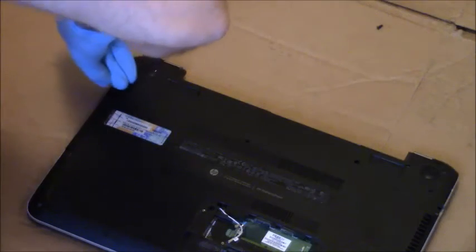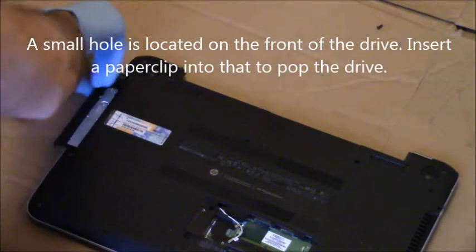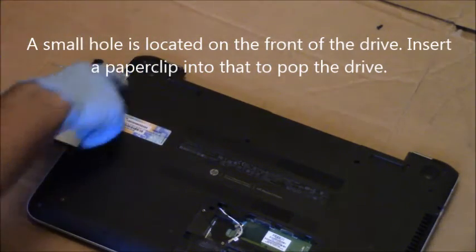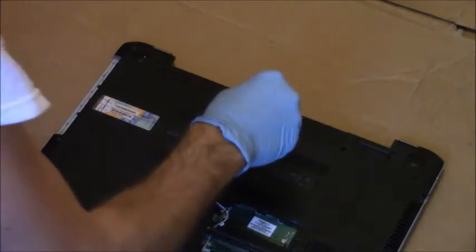Then you want to take off the DVD drive. It has one screw. Then you can take a paper clip and stick it in a small hole in the front like I just did there and then kind of pull it out. You might have to tug a little bit, but be careful not to damage it.